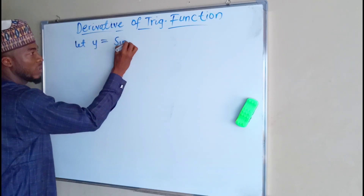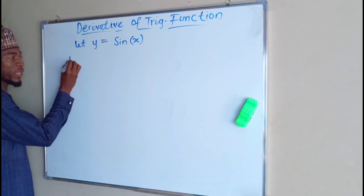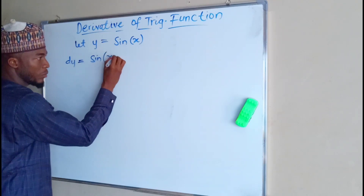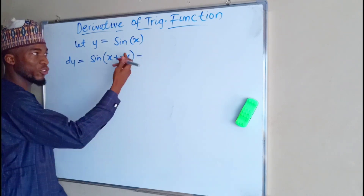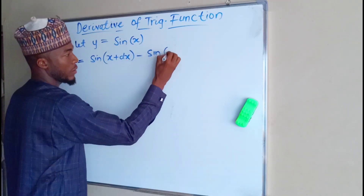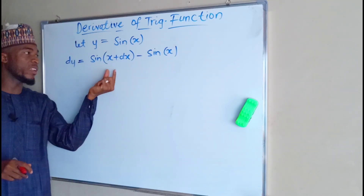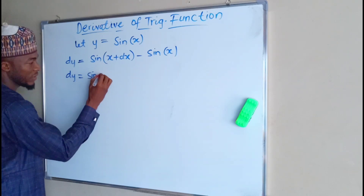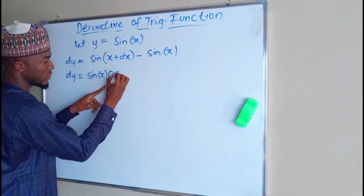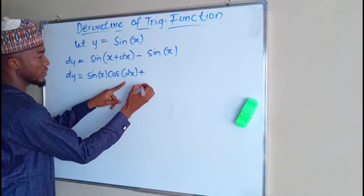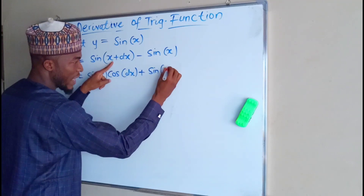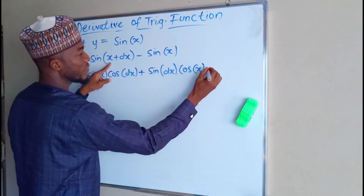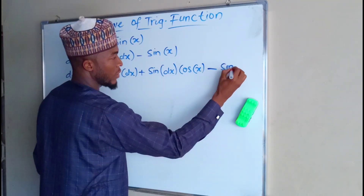Let y equal sine x. The change in y, dy, will be equal to sine of (x plus dx) minus the function which is sine x. Do not just expand this as sine x plus sine dx. This is how it is going to be: dy equals sine x times cos dx, then you add sine dx times cos x. Then you subtract the function sine x.